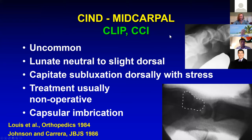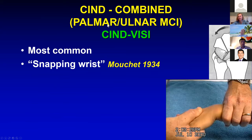Moving on to what's called CIND-midcarpal: a disorder only of the midcarpal ligaments leading to CLIP or CCI. It is uncommon. The lunate is generally in neutral posture. The capitate subluxes dorsally with stress or patient activities and pops out of the midcarpal joint. Treatment is usually non-operative with therapy; capsular imbrication has been described. What we think of as palmar or ulnar mid-carpal instability is really CIND-combined — ligaments on both sides of the proximal carpal row — better thought of as CIND-VISI in its most common form.